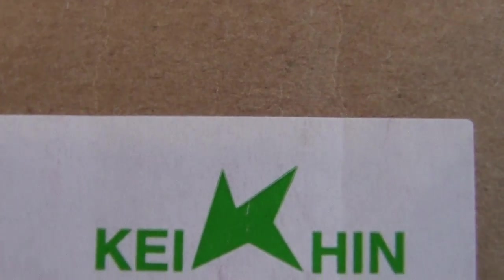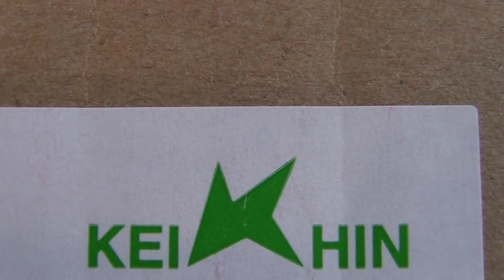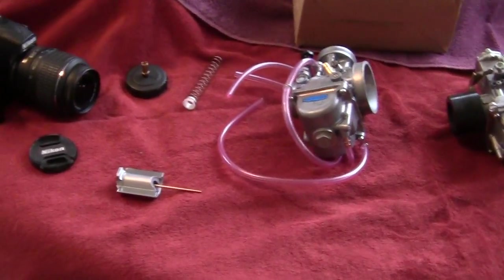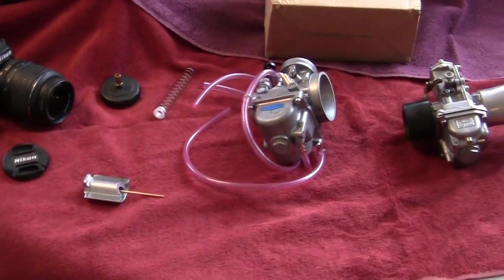It will also have this little genuine Keihin marking, it'll look like that right there. On the jet, if you get a carburetor that doesn't have these things, chances are it's a fake.